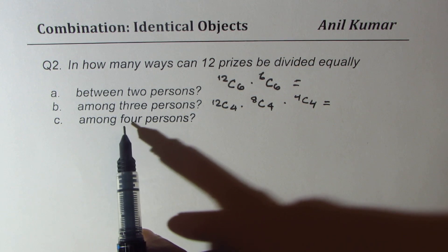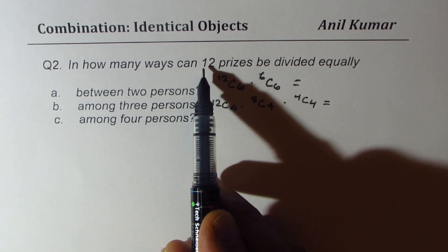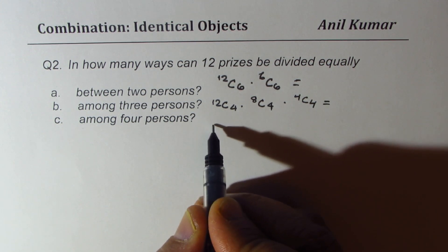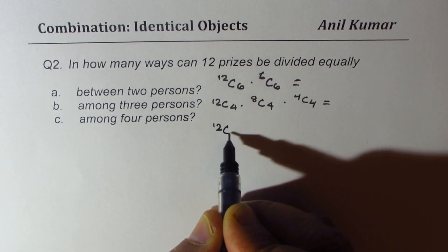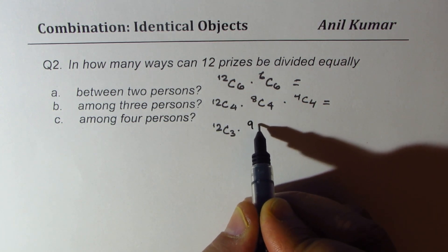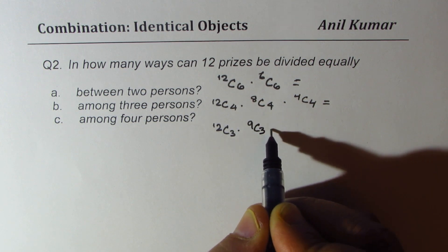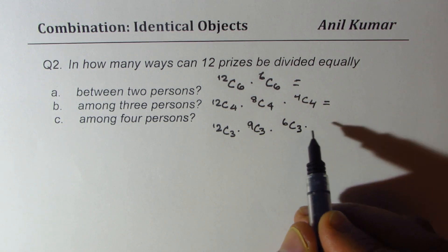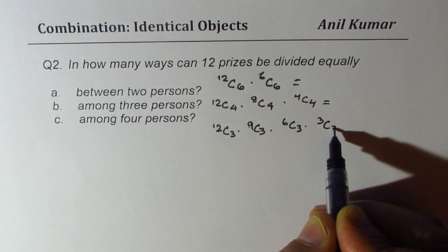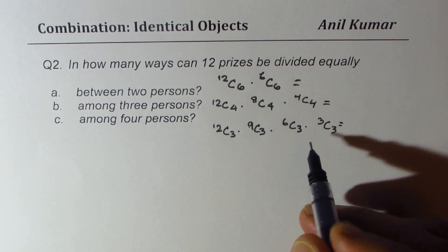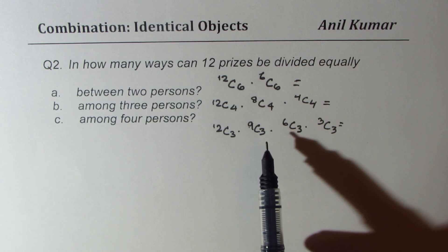And the last one, if there are four persons and there are 12 prizes, each gets equally how many? Three. So here the combination is 12C3 times, take away three, we are left with nine, 9C3. And then we take three more, we are left with six, 6C3 times 3C3. Do you see how we can collect the answers very easily using this concept?